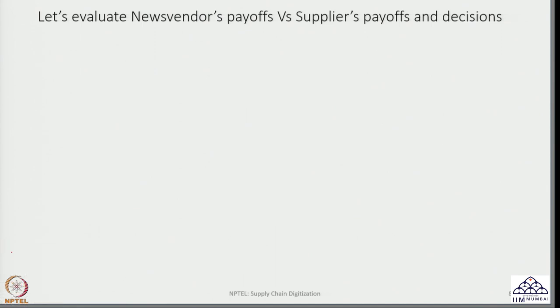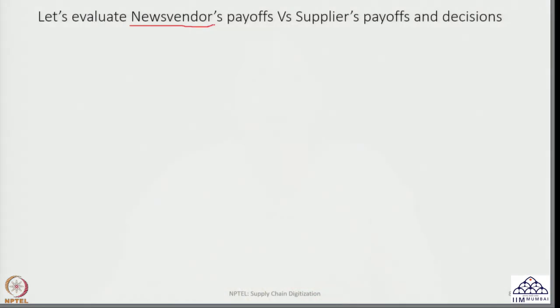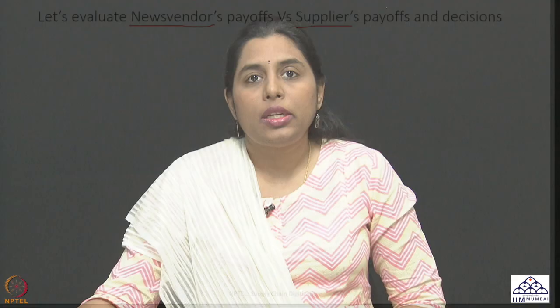I am extending the same problem a bit more in order to understand the payoffs of both the news vendor as well as the supplier, and to see how decisions of the news vendor impact those payoffs. Remember what kind of order exists in the decision making: the first player who takes the decision is actually the news vendor. The supplier has no other option but to either accept what the news vendor orders or to reject it. So the news vendor is actually determining for the entire supply chain what order gets placed.